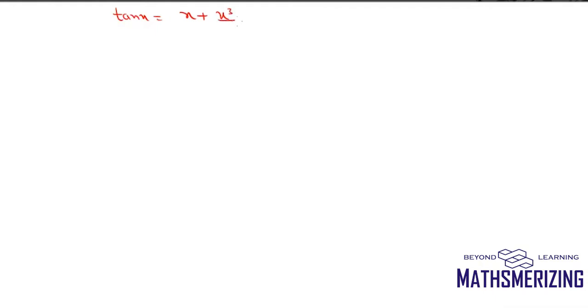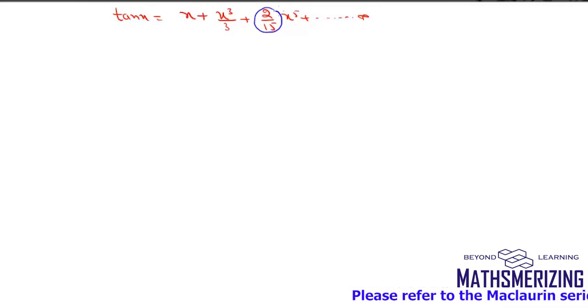Why is the expansion of tan(x) equal to x plus x³/3 plus (2/15)x⁵, going up to infinite? Most students want to know how to get the 2/15, because there is no obvious pattern or symmetry in the series. The answer lies in the Maclaurin series.